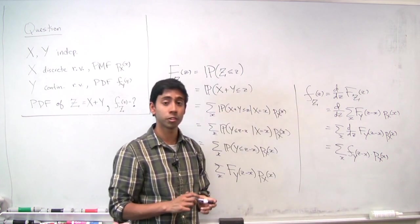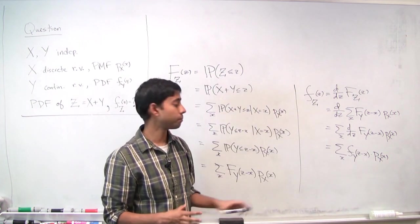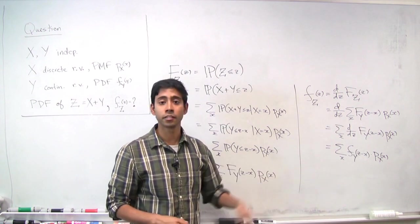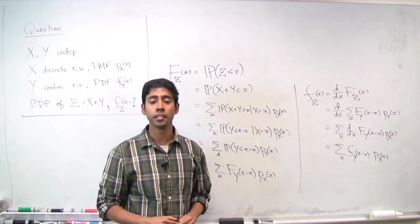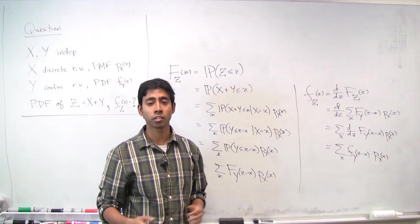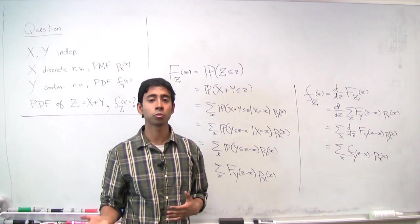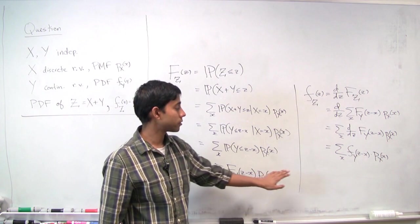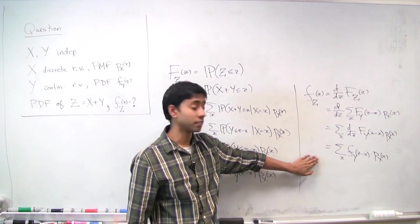We've derived the PDF of z. Notice that this looks quite similar to the convolution formula when you assume that both x and y are either continuous or discrete. And so that tells us that this looks right.